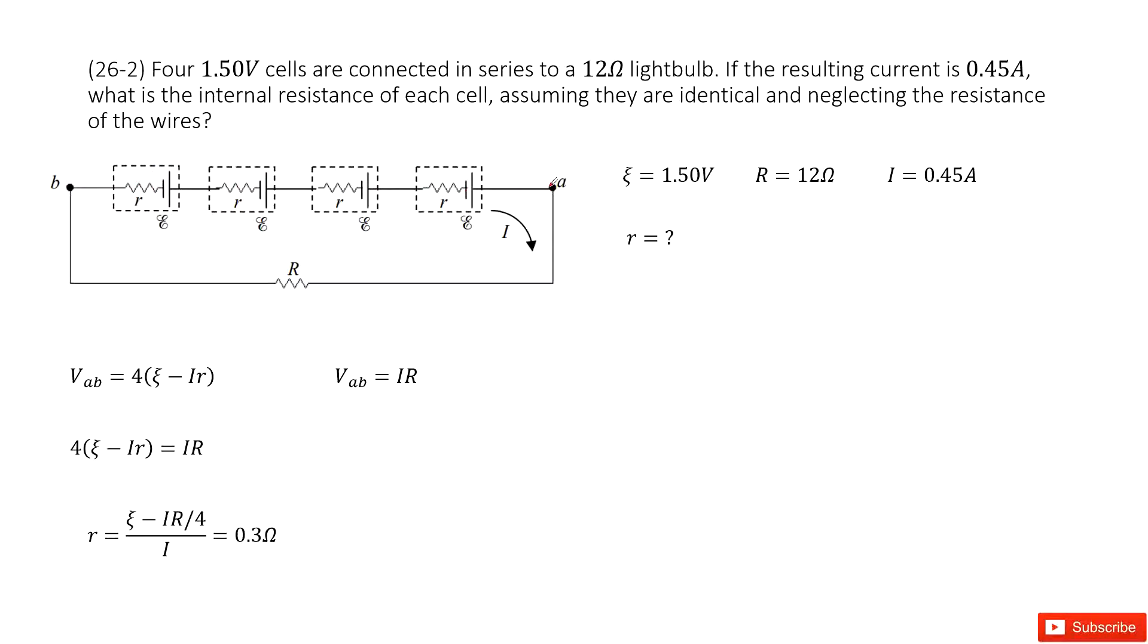The terminal voltage, we can call it VAB, right? And for each one, we can see we have epsilon. This is called EMF. And the small r is internal resistance for each one.